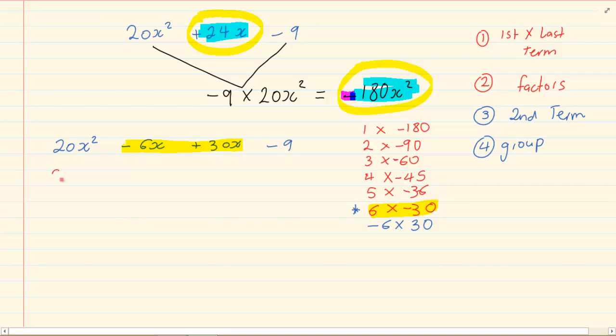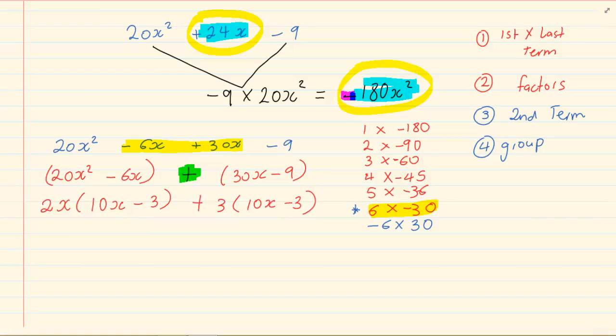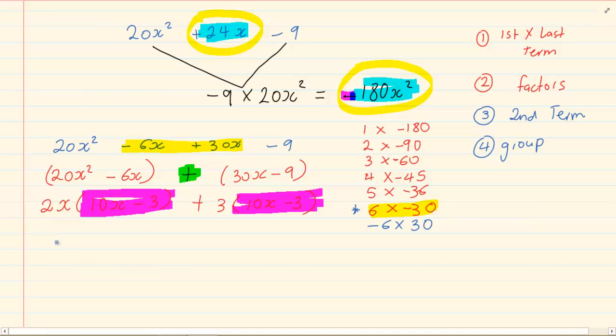Now, we're going to do grouping. So, I'm going to group the first two plus remember that whenever you're grouping the sign in the middle must be plus. Then, we're going to take out a common. So, our common here is 2x and I'm left with 10x minus 3 plus my common here is 3 and then I'm left with 10x minus 3. Then, we take out a common bracket. So, we're going to have 10x minus 3 as my common and I'm left with 2x plus 3.